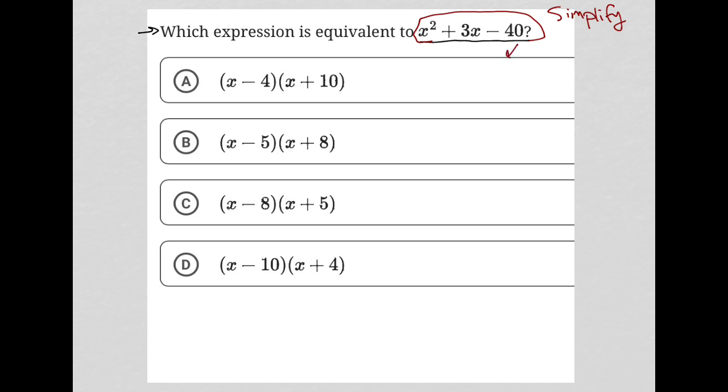The way that you do that is to find the two factors of the third term here, negative 40, which add up to positive 3. So we want two numbers that multiply to equal negative 40, but when added are equal to positive 3.